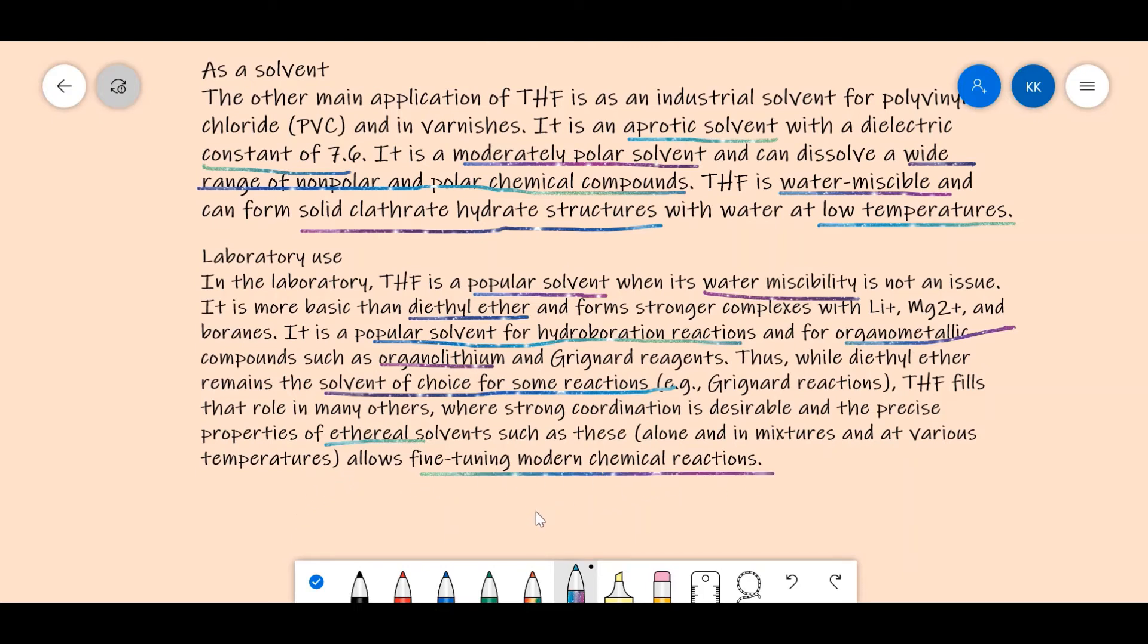And the precise properties of ethereal solvents such as these, alone and in mixtures at various temperatures, allow fine-tuning modern chemical reactions. This means that due to the high degree of variability which we have, as we can control the reactions, this allows us to fine-tune modern chemical reactions, and hence it is a very important solvent.